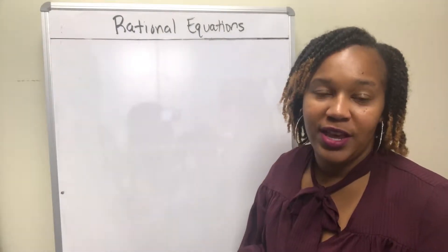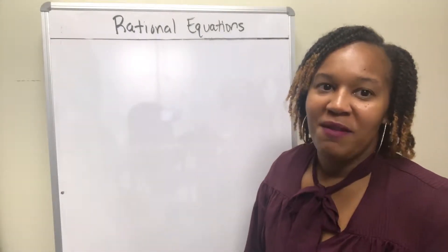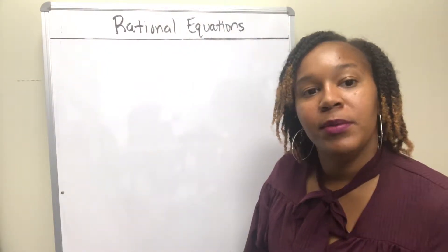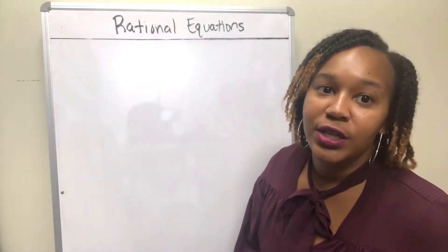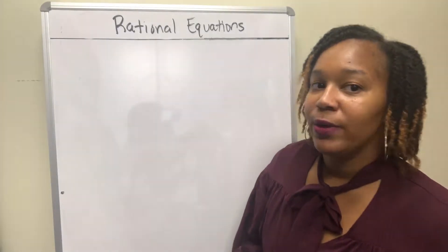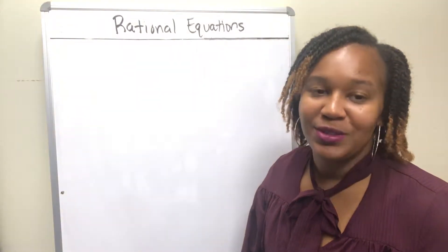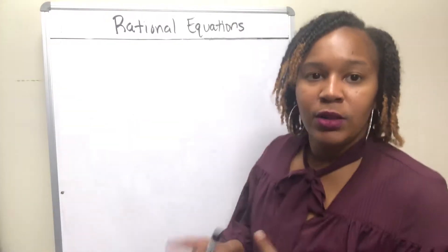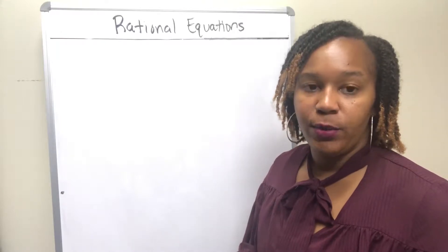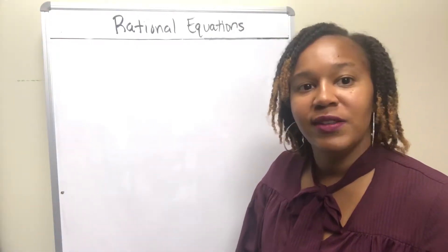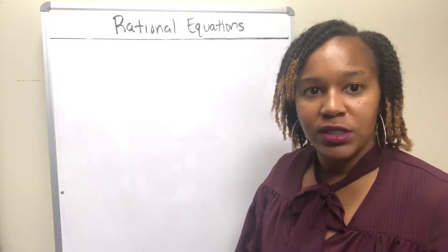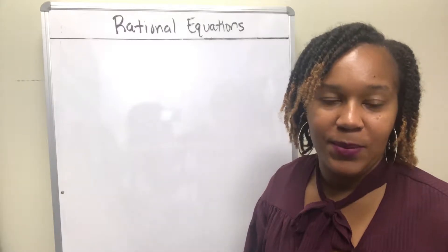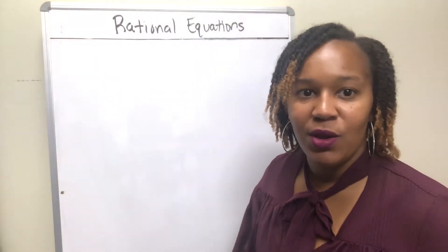A rational equation is an equation that has a fraction in it. Fractions are like those family members that we love dearly, we just can't stand to be around — so when we get around them, we try to get rid of them as soon as possible. That's the same thing we want to do when solving rational equations. Not only is it a fraction, but now we have variables in the denominator. So there are a series of steps we'll need to go through, and I'm going to take you through each of those steps solving an example.